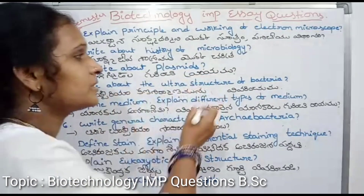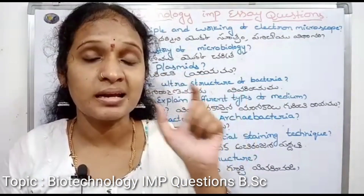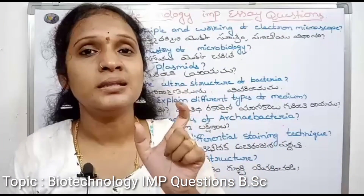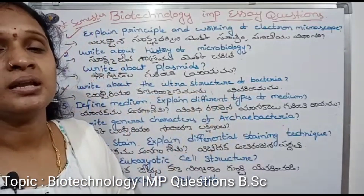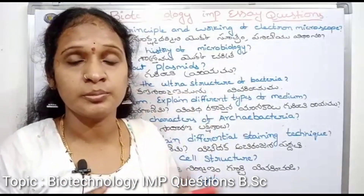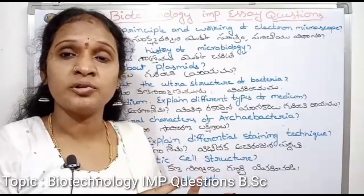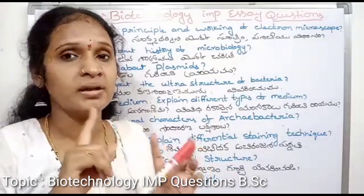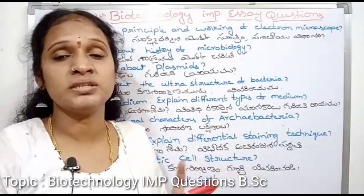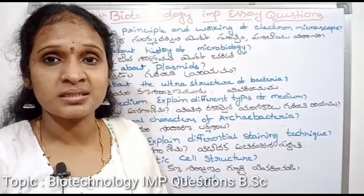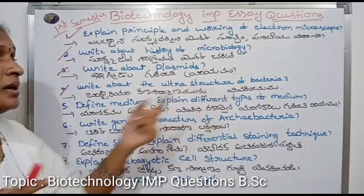Write about the ultrastructure of bacteria. Bacteria has a cell structure. The bacteria has an explanation as a prokaryotic organism. If you choose one answer, it is a prokaryotic organism with a particular cell structure.